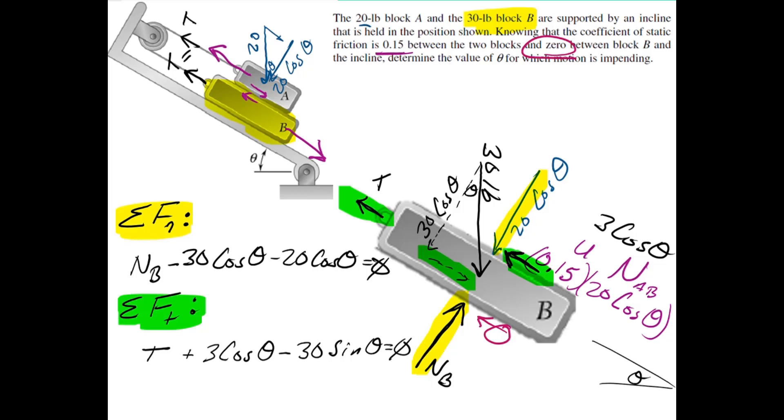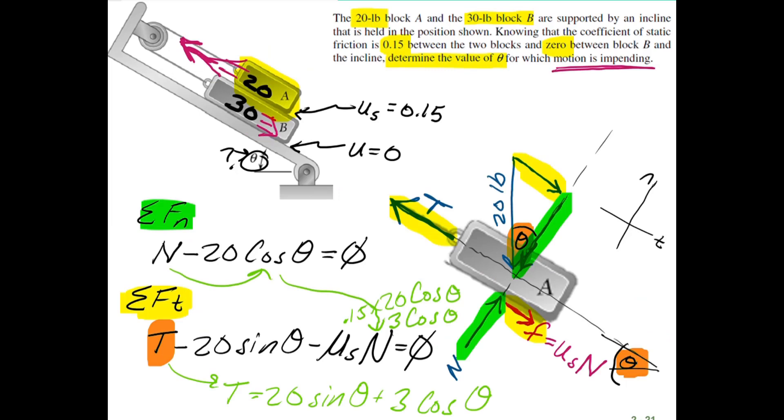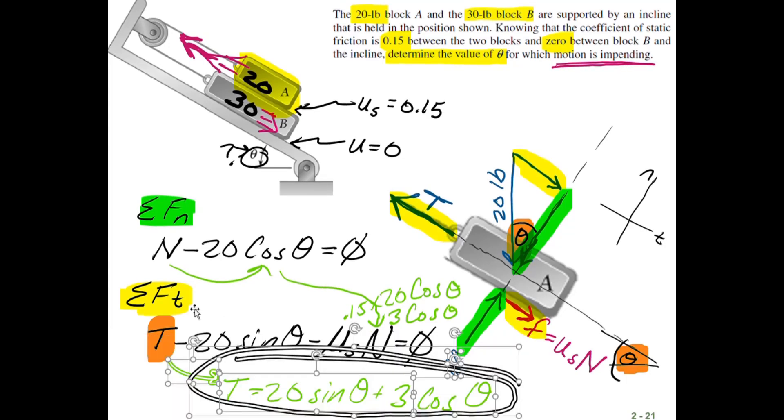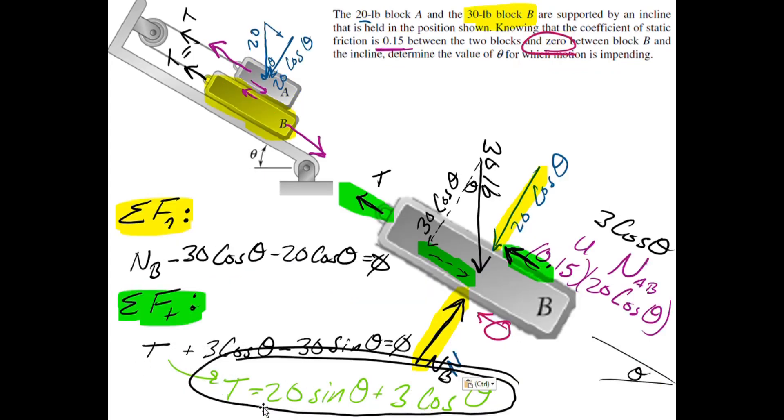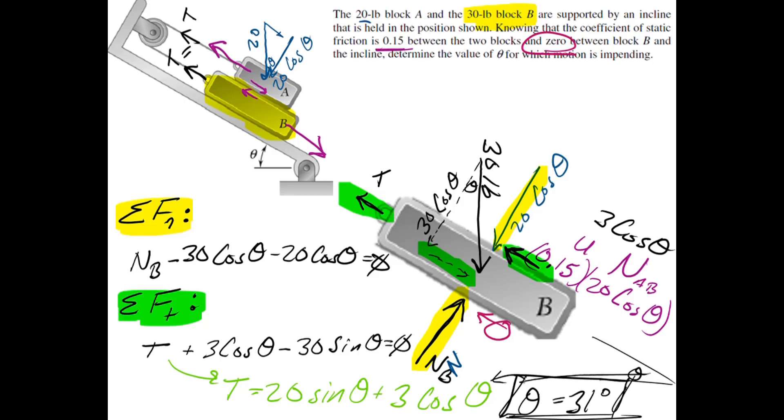So now that we have normal and tangent for both blocks, what we want is something just a function of that angle. So we're going to need to get rid of that tension, which means that we need to go back to our previous calculation. So here's what we found on A for tension. I'm going to take this equation for tension from A, and we're going to copy and paste it over and then plug it in for that tension in B. So once we get rid of the tension term, everything is in terms of theta, and we can solve for what theta it is. It ends up being 31 degrees.